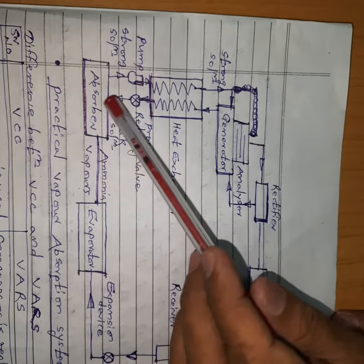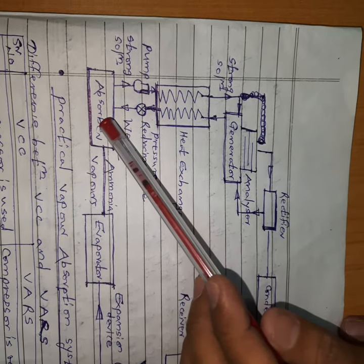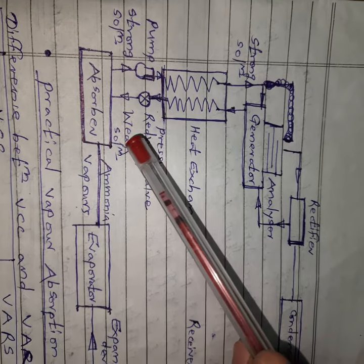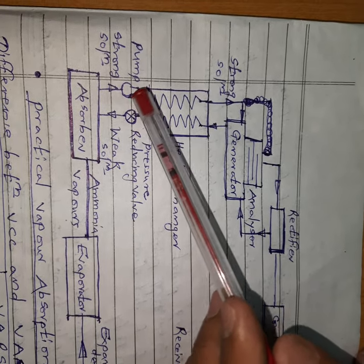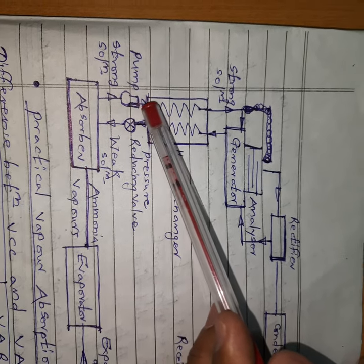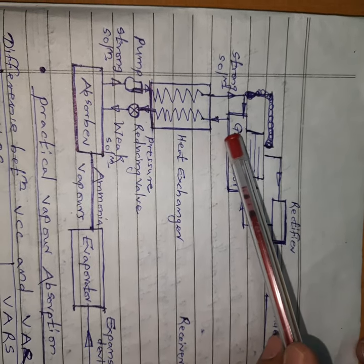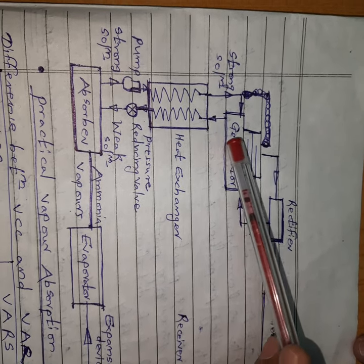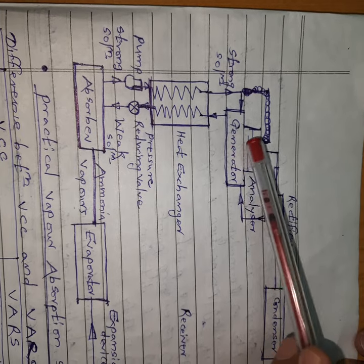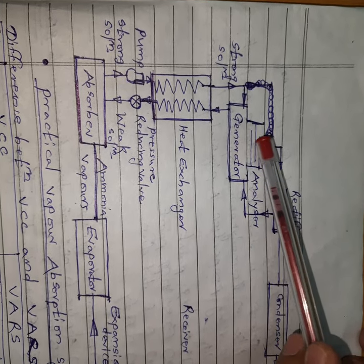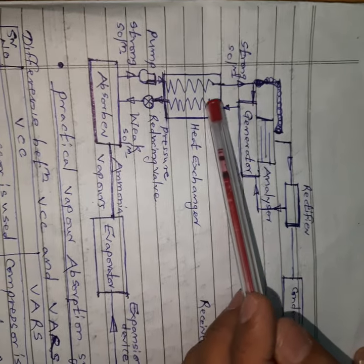When ammonia vapors are absorbed by the water, a strong solution of ammonia is formed. This strong solution cannot absorb more ammonia vapors. So we remove the strong solution of ammonia from the absorber using a pump. The strong solution passes through the heat exchanger and is supplied to the generator. In the generator, the strong solution of ammonia is heated below 100°C, and when the saturation temperature of ammonia is reached, ammonia vapors are separated from the water-ammonia solution. The remaining weak solution of ammonia moves back towards the absorber.